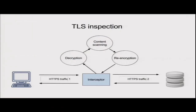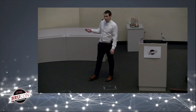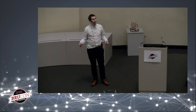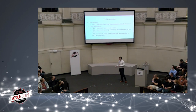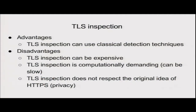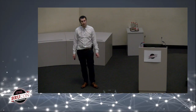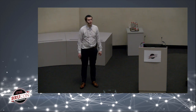One solution is TLS inspection, which works by placing an interceptor — for example a proxy server — between client and server that decrypts the traffic, scans for malicious content, and re-encrypts it. This has advantages and disadvantages. The proxy can be expensive or computationally demanding, and the main issue is that TLS inspection does not respect the HTTPS idea of privacy.